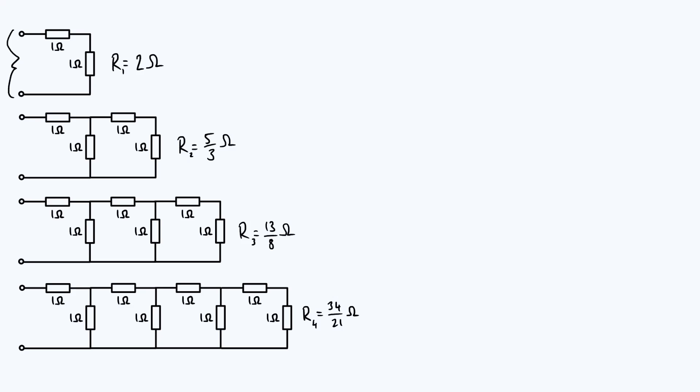So if you apply those rules, you get the resistances which I've labelled R1, R2, R3, and R4, where the subscript just indicates how many repeating units we have in each network.